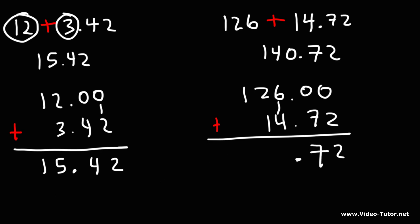4 plus 6 is 10. We're going to write the 0, carry over the 1. And then we have 1 plus 2 plus 1, that's 4. And here we could just bring down 1. So we get 140.72.